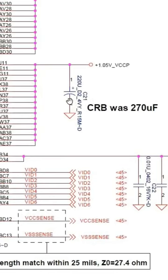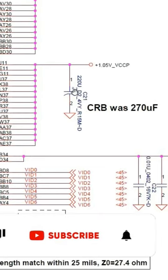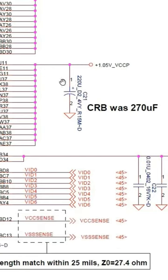Here we have an electrolytic capacitor, or a polarized capacitor. There's a difference between a polarized capacitor with plus and minus, and a simple capacitor like a ceramic capacitor. As you can see, for this capacitor its reference is C21, and it has plus and minus.